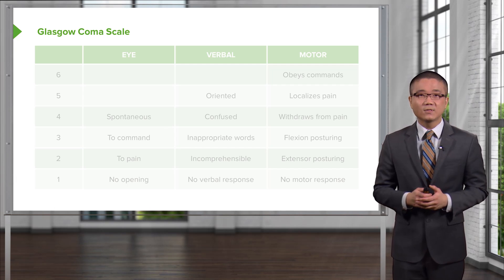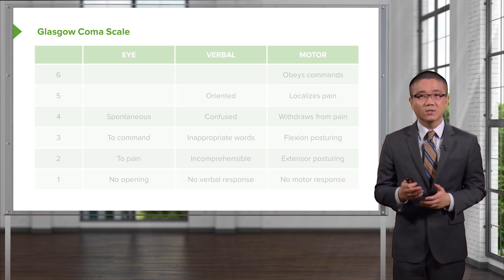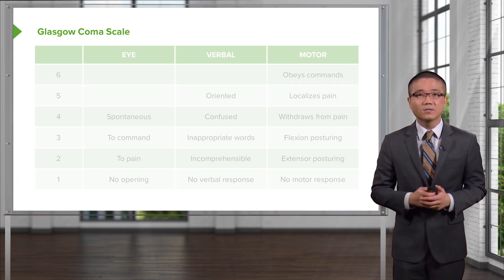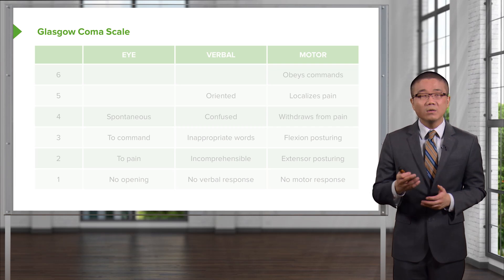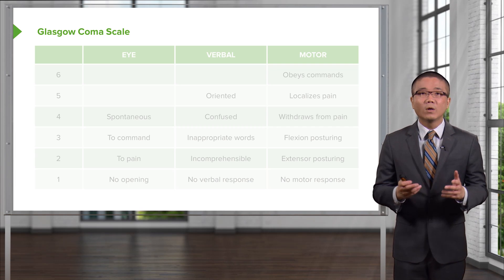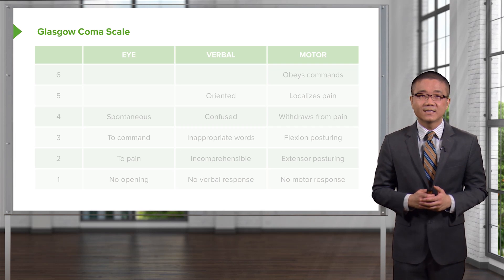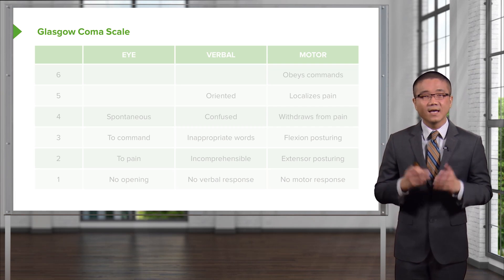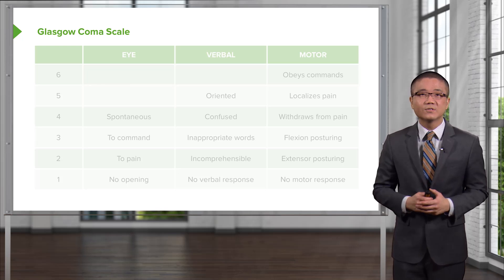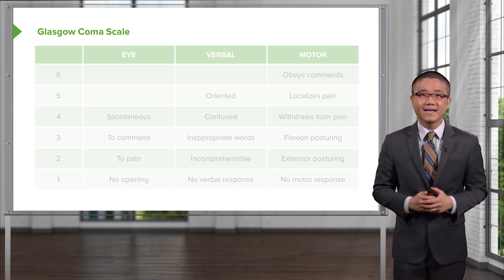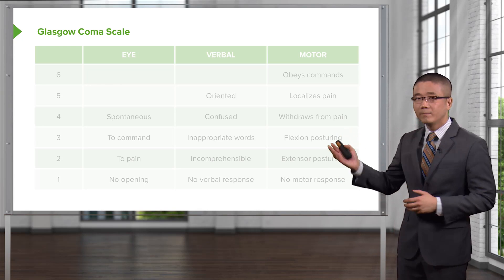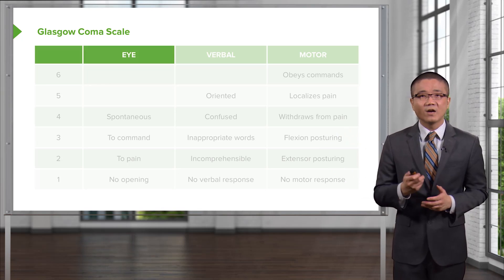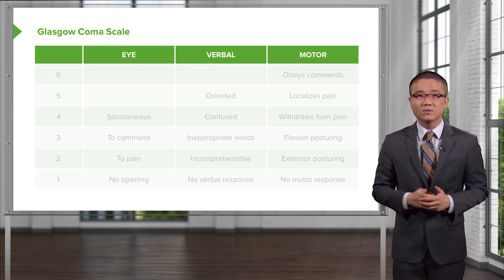Now that you've ascertained an intact airway, a breathing patient, and a patient who has intact circulation, we move to the D of disability, where we ascertain a Glasgow Coma Scale. The Glasgow Coma Scale has three components — it's a global assessment of the patient's neurological status. You'll notice that there are columns for eye, verbal, and motor examinations.